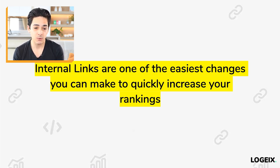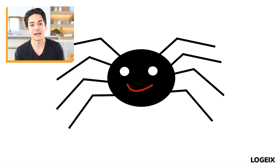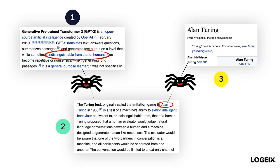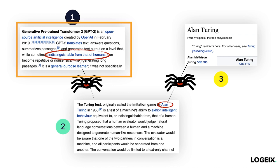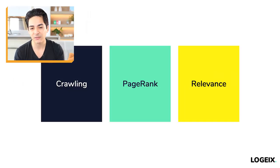If you remember back to the first video in this course, we introduced this friendly little spider, which is what Google sends out to crawl the web and find websites and pages to add to their search engine. One of the ways they do this is by identifying and following links — from page one they click that link, go through to page two, see another link, go through to page three. So they're following links, but there's much more than that. There's crawling, but there's also page rank and relevance.